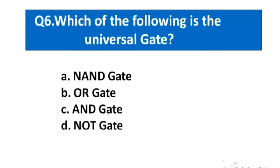Question number 6. Which of the following is the universal gate? Option A. Nand gate, B. Or gate, C. And gate, D. Not gate. The right answer option A. Nand gate.